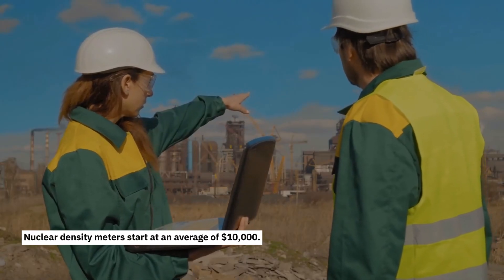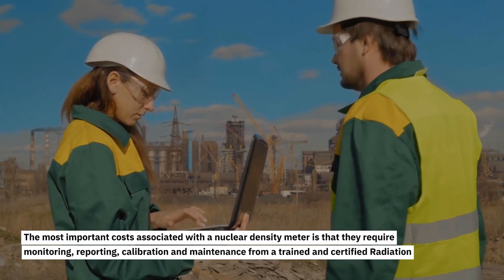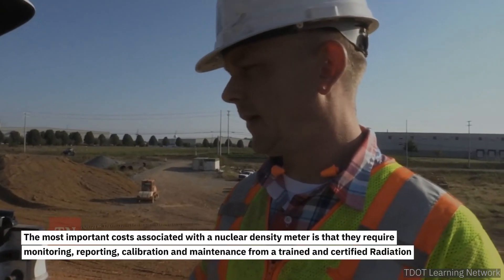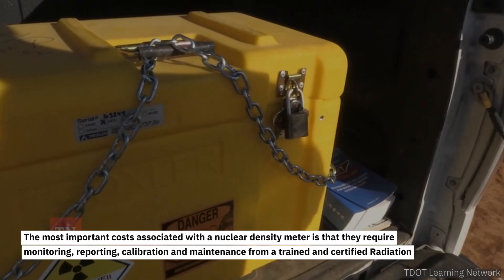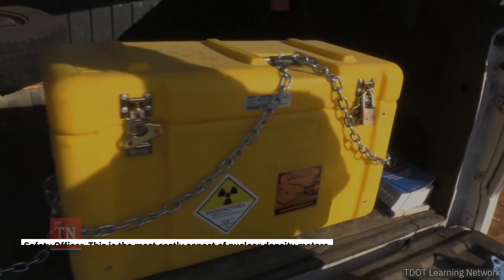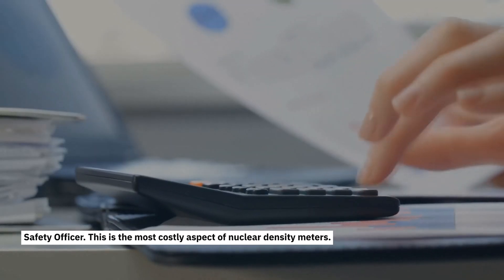Nuclear density meters start at an average of $10,000. The most important costs associated with a nuclear density meter is that they require monitoring, reporting, calibration, and maintenance from a trained and certified radiation safety officer. This is the most costly aspect of nuclear density meters.